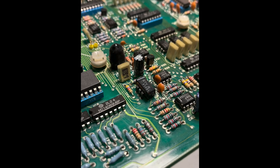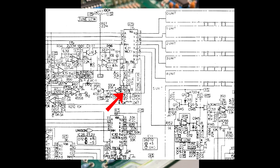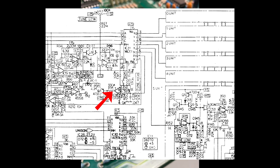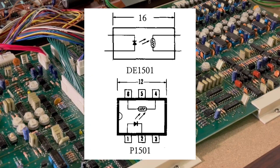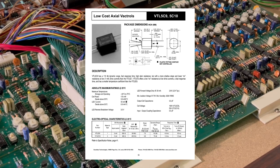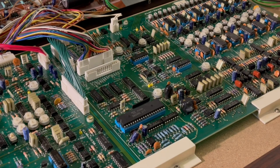Other signs for a bad optocoupler are no change of pitch when turning VR2 and a voltage around minus 13V on pin 7 of IC18. I removed the optocoupler and put in an IC socket to be more flexible on trying out replacement parts. The original P1501 is very hard to source and at incredible prices. Luckily there is a replacement: the Vactrol VTL5C9, which is easy to find. I already had this part in stock for my DIY synthesizer builds. After putting the Vactrol in, it was rather easy to get the synthesizer into tune.